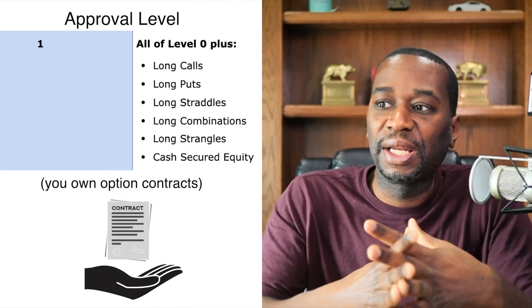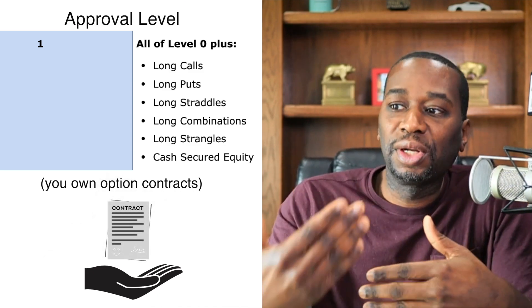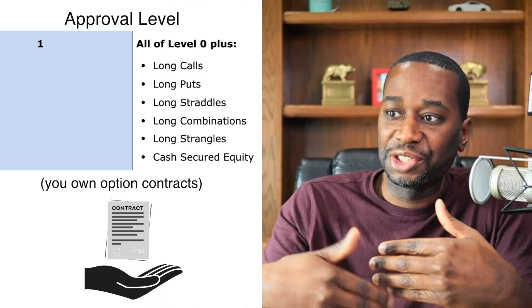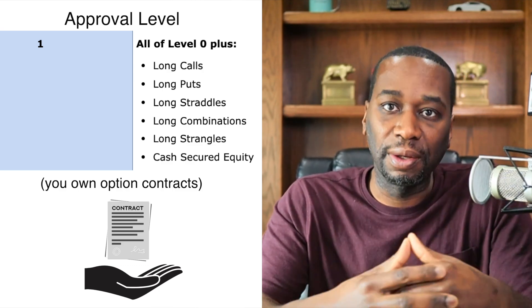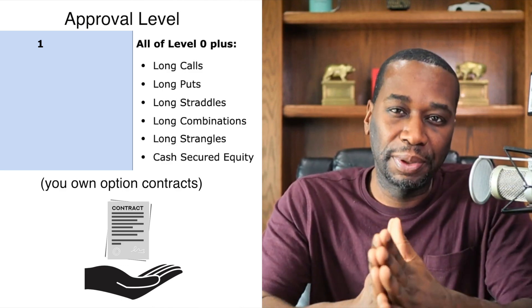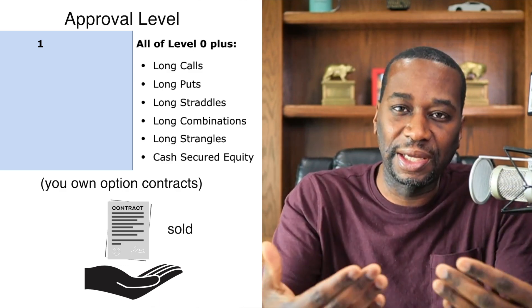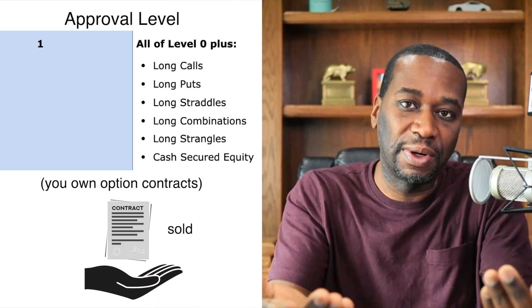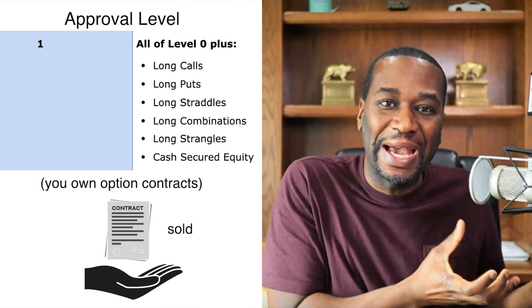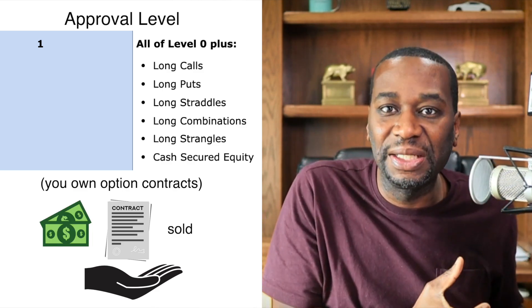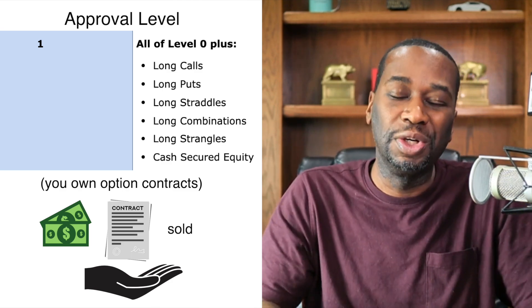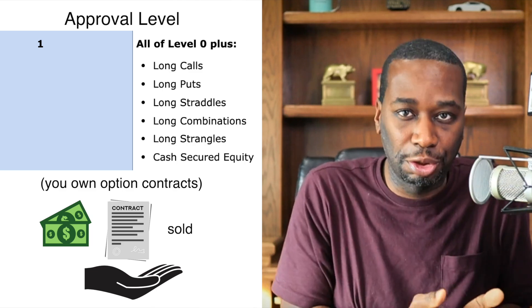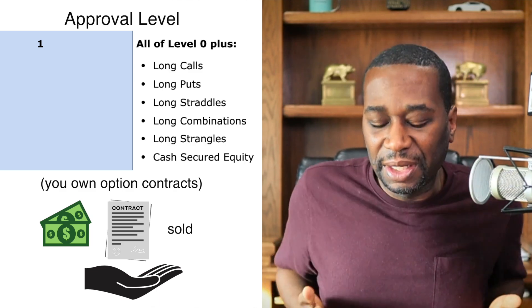You can go long straddles, combinations, strangles, and also cash secured equity puts. What a cash secured put is, is let's say you sold a naked put or a put to someone else, you would at least have to have enough money to buy the stock should the stock get put to you. So that's why they call it a cash secured put, because technically you're not naked because you have the money to buy it.